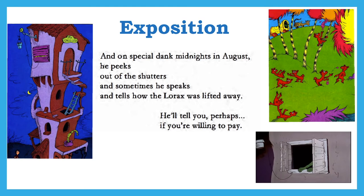Once he begins the story, we get a flashback scenario where he gives the reader a more classic exposition, describing the setting of the Truffula trees and the animals who lived there. This provides a nice setup for the allegory because we can see how healthy and happy things were before the Onceler came.